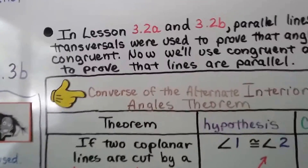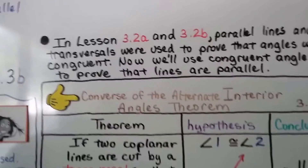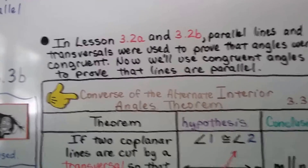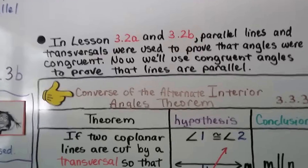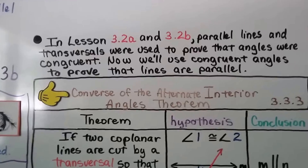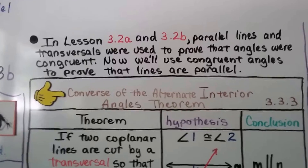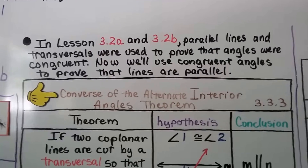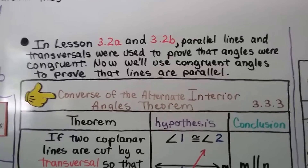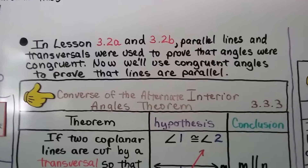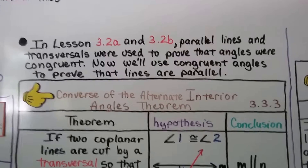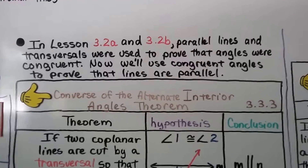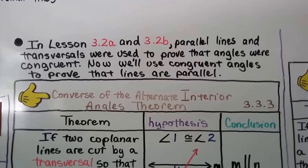In lessons 3.2a and 3.2b, parallel lines and transversals were used to prove that angles were congruent. Now we'll use congruent angles to prove that lines are parallel — we're going to flip it around.